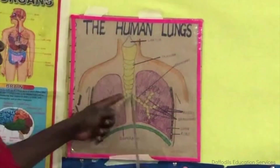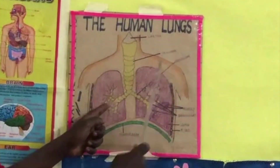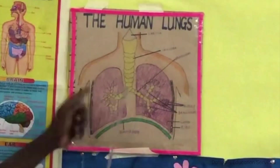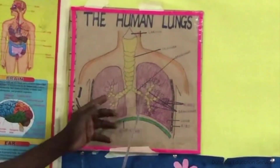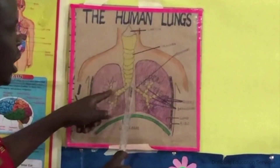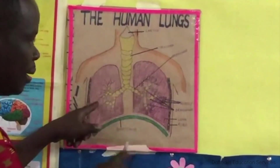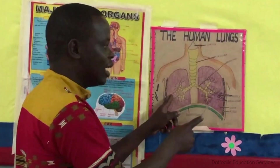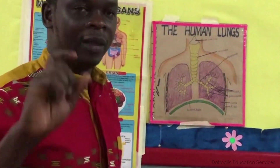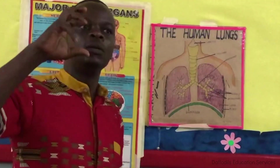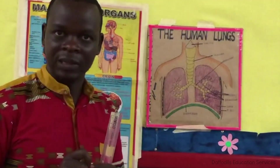When the air reaches the trachea, it branches into the bronchus. When there are two bronchus, the two are called bronchi. They divide into the lungs. Now, in the lungs, there are small sacs called the alveoli.